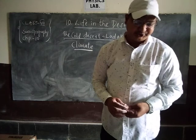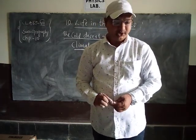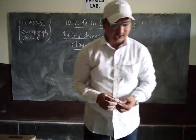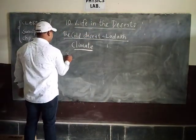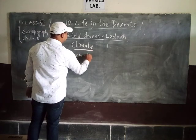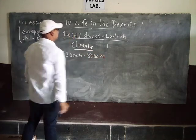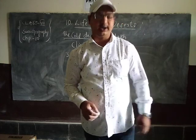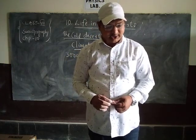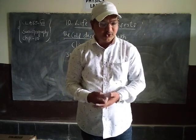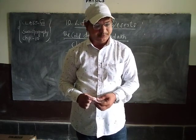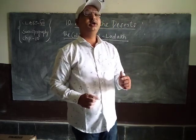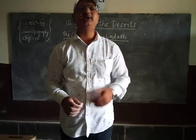The altitude of the place varies between 3,000 meters in Kargil to more than 8,000 meters in the Karakoram. Therefore, Ladakh is known as a cold desert area. The climate is extremely cold and dry due to the high altitude. The air at this altitude is so thin that the heat of the sun can be felt intensely.